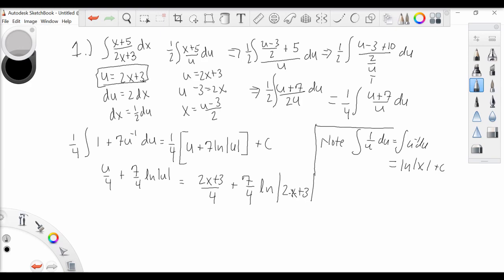And we can simplify this even further. Everything is over 4, so we have 2x plus 3 plus 7 ln 2x plus 3, all over 4.